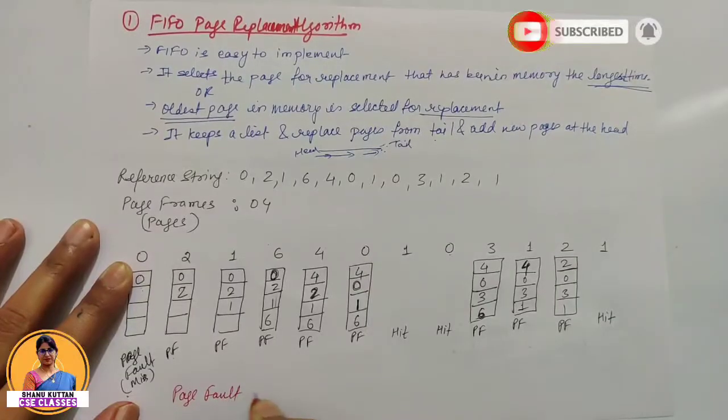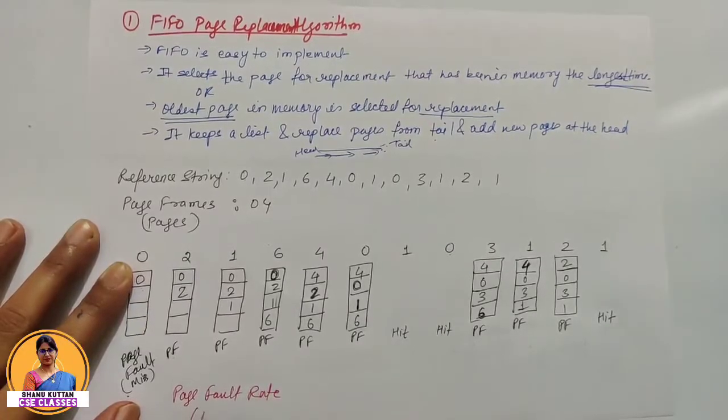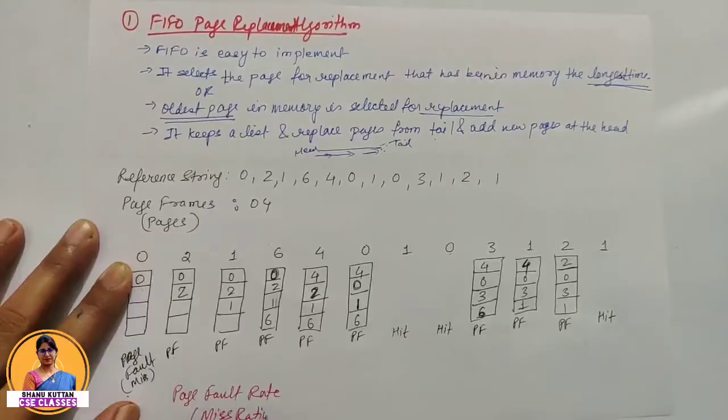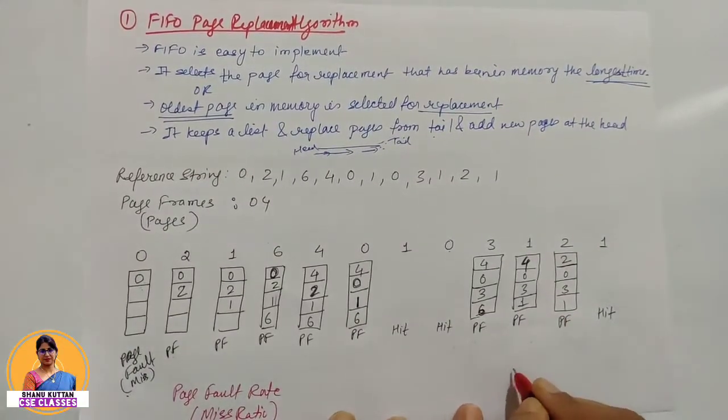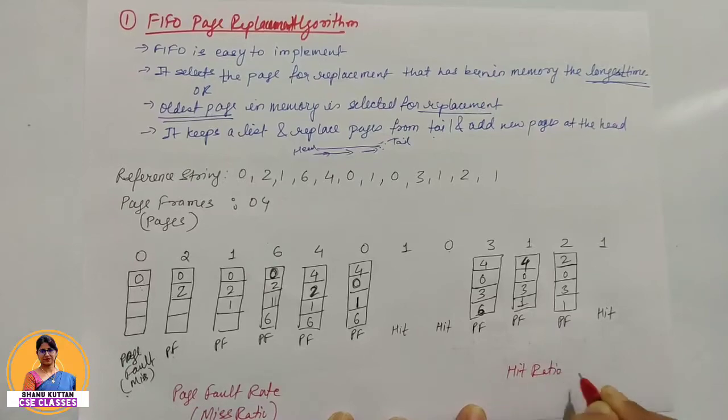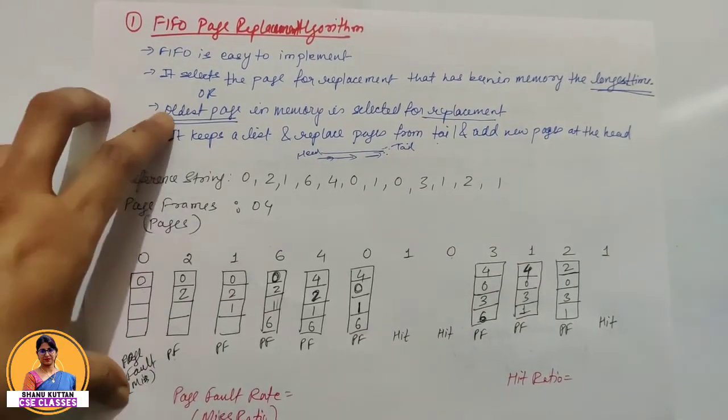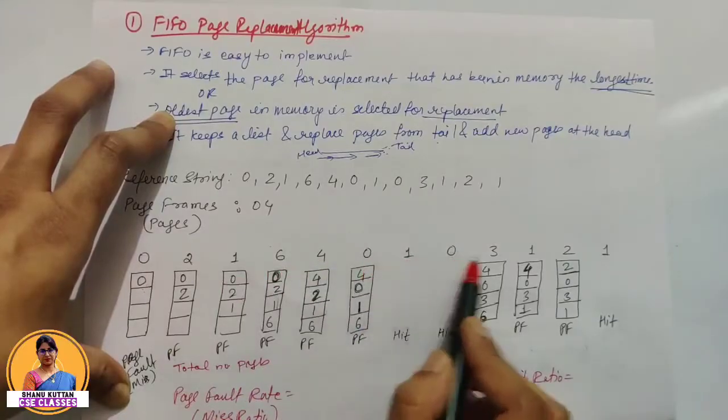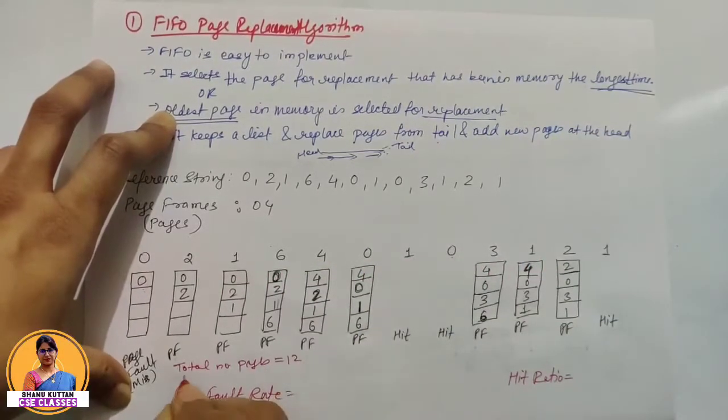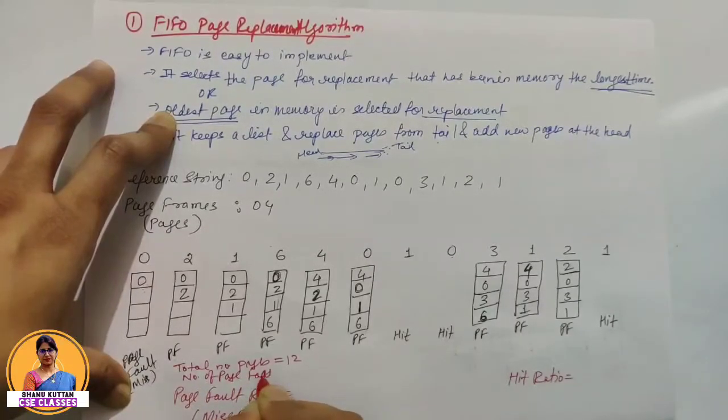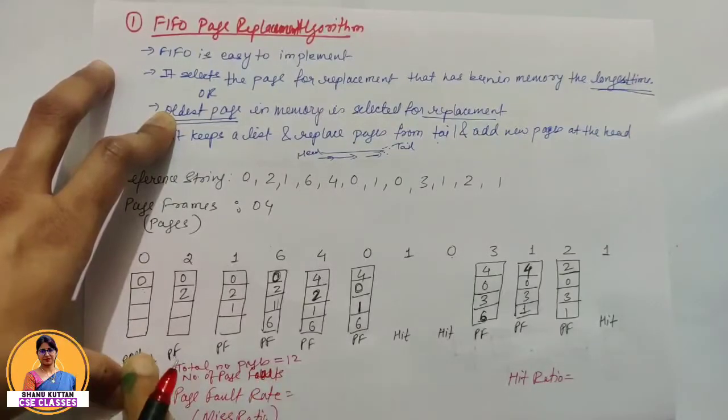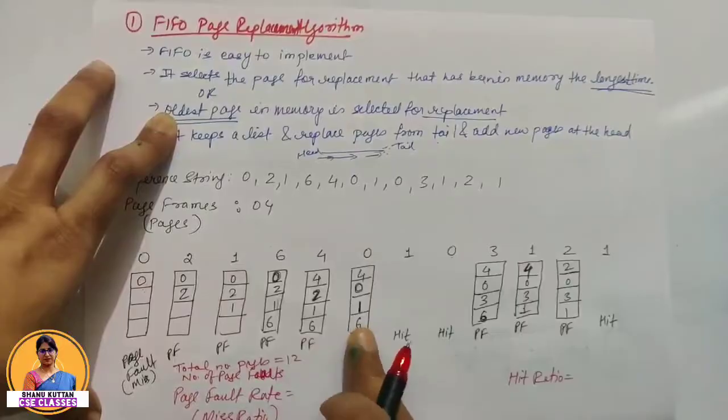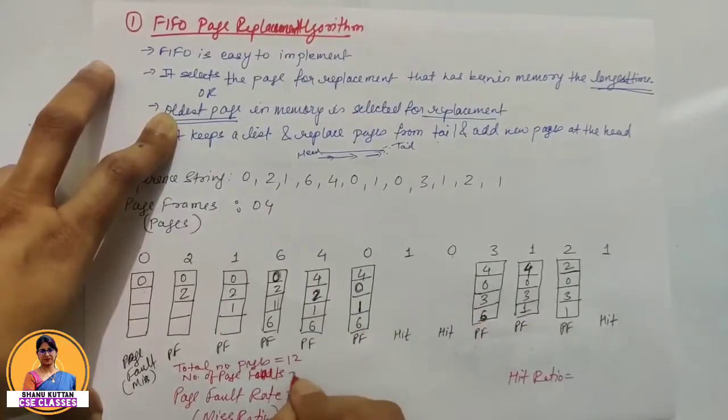What is page fault rate, which in other terms we also call miss ratio? To find this, we count total number of pages: 1, 2, 3, 4, 5, 6, 7, 8, 9, 10, 11, 12. Total number of pages is 12. Number of page faults: 1, 2, 3, 4, 5, 6, 7, 8, 9. Page faults are 9.